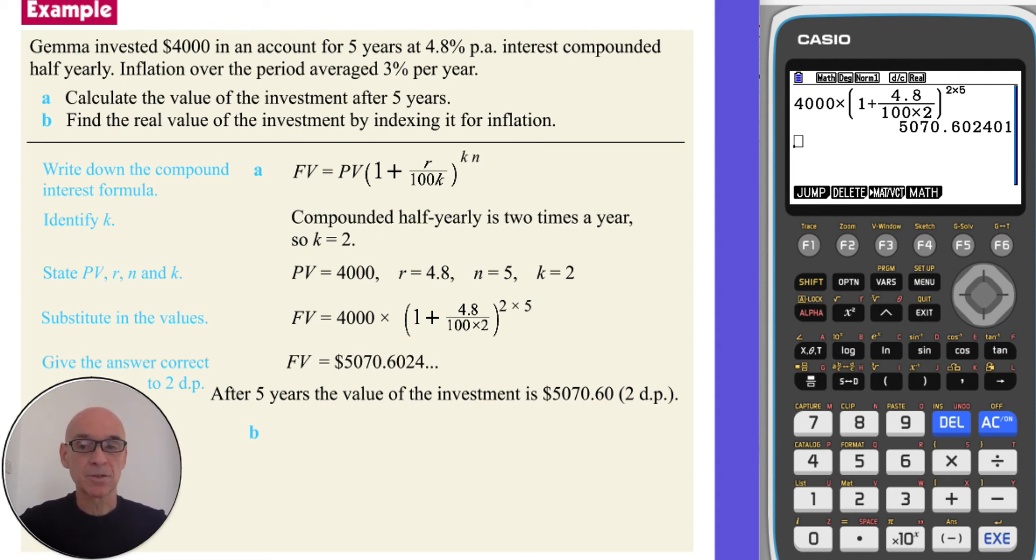In part B, we're asked to find the real value of the investment by indexing it for inflation. And to do that, we need to divide the final value by the inflation multiplier, again raised to the power of 5, as shown. So we get a real value, or a value in real terms, of $4,373.94.